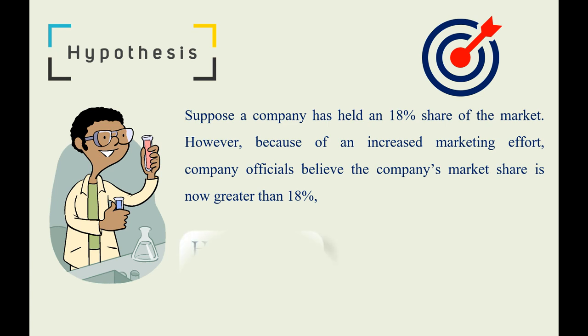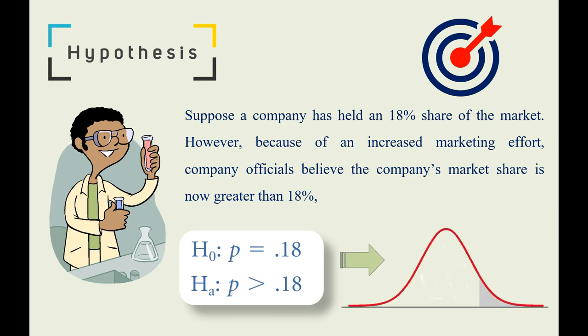the null hypothesis and alternative hypothesis can be written as H0: p equals 0.18 and HA: p is greater than 0.18. This is a typical case of one-tailed test.